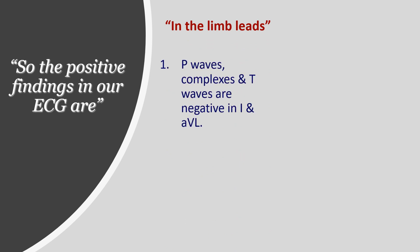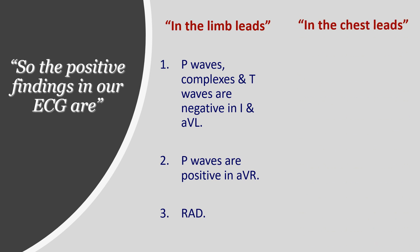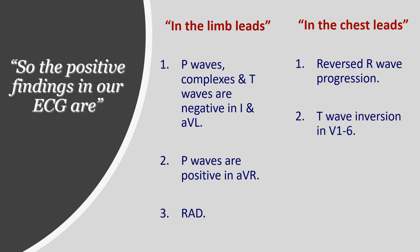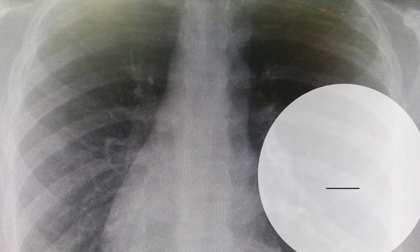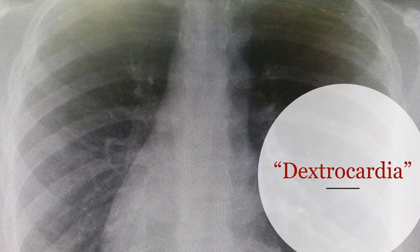In summary, the positive findings in this ECG are: in the limb leads — P waves, complexes, and T waves all negative in lead I and AVL; P waves positive in AVR; and right axis deviation. In the chest leads — reversed R wave progression, T wave inversion from V1 to V6, and QRS complexes getting smaller from V1 to V6. Combining all these findings leads to one single diagnosis: dextrocardia.